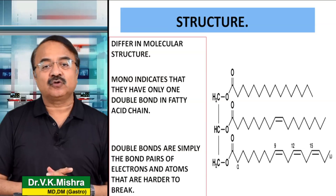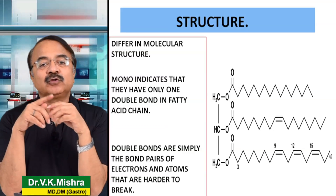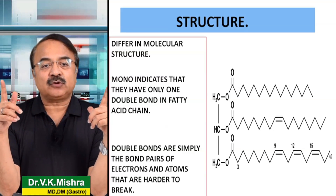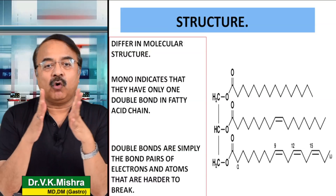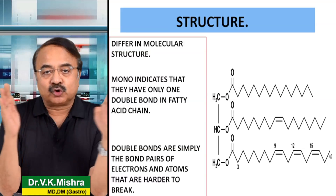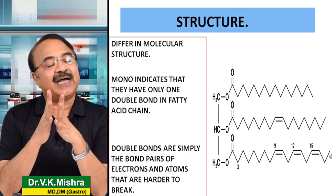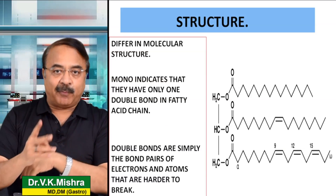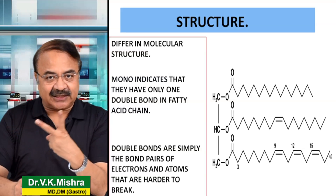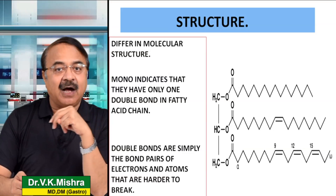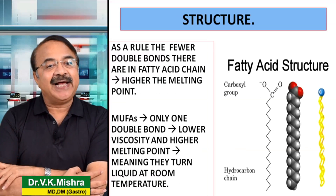जहाँ तक double bonds का सवाल है, basically वो उस तरह के pairs होते हैं जो electrons and atoms को जोड़ के रखते हैं, and they become basically harder to break. ये जो bonds हैं, यही हमारा जो structure है fatty acids का, उसको intact करने में मदद करते हैं.